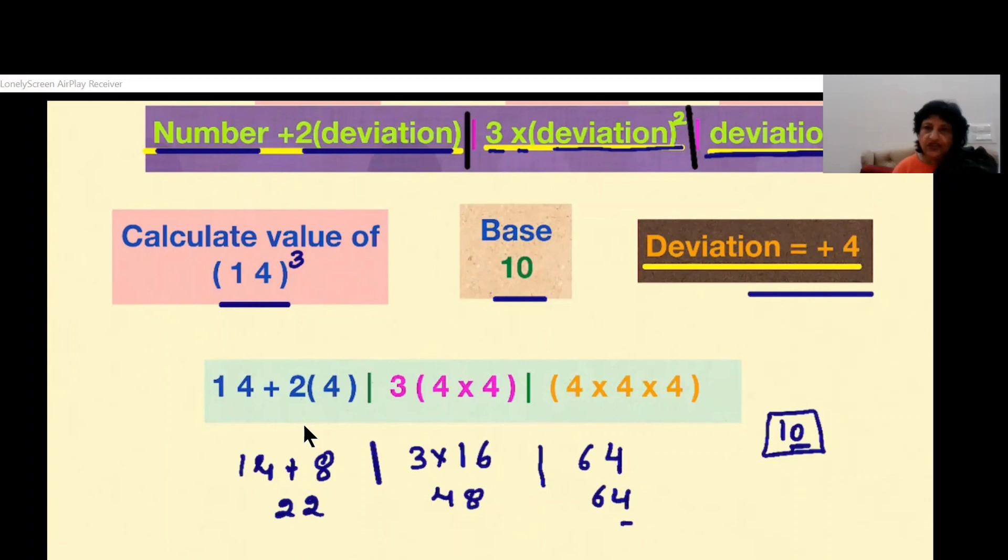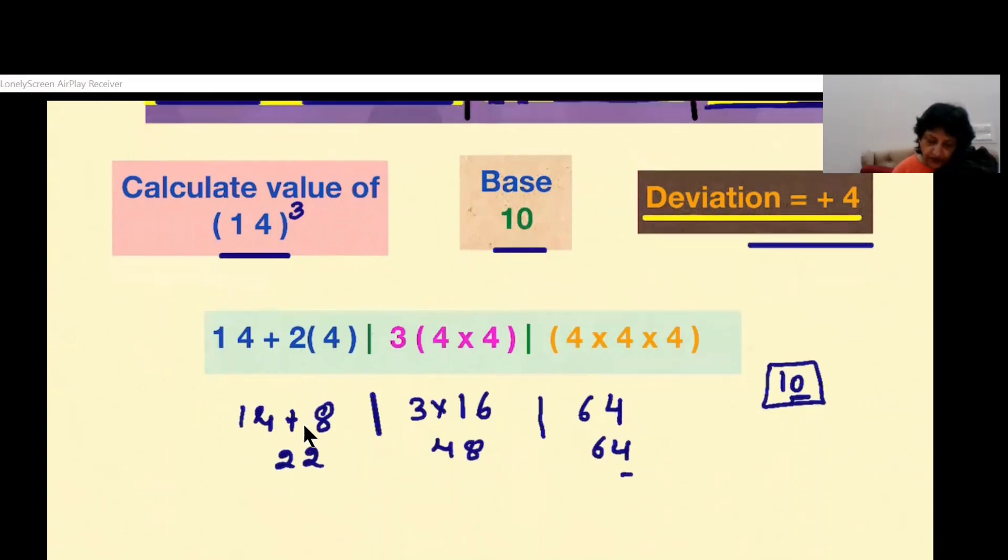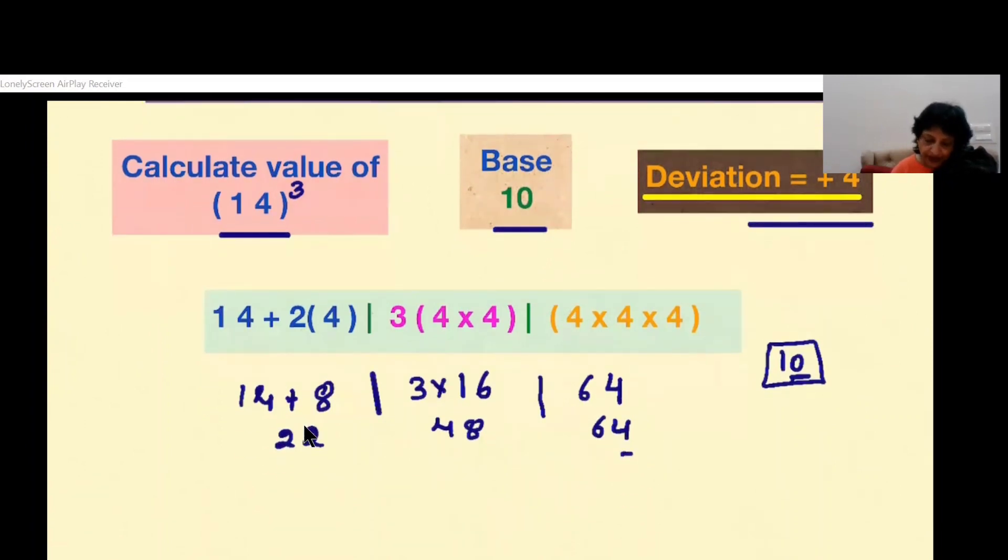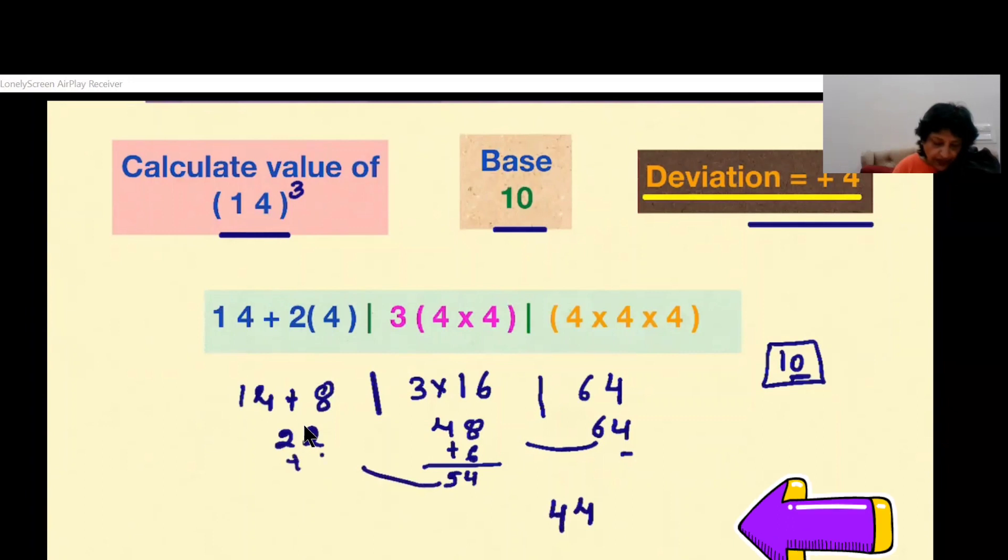So let's do the balancing. 4 will be over here. This 6 will be carried to the next section, added with 48 it becomes 54, so we drop 4 over here and carry 5 to the next one. Add up with this 22 we get 27, so we have 27 over here.